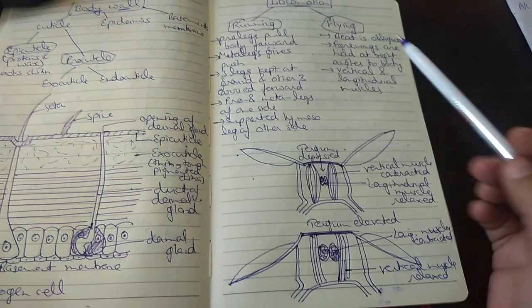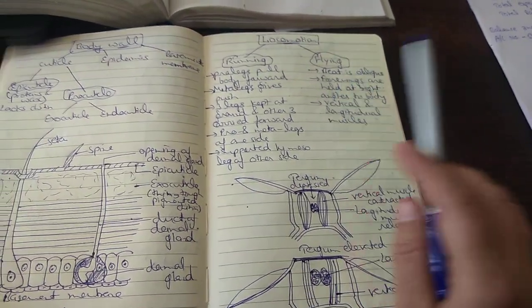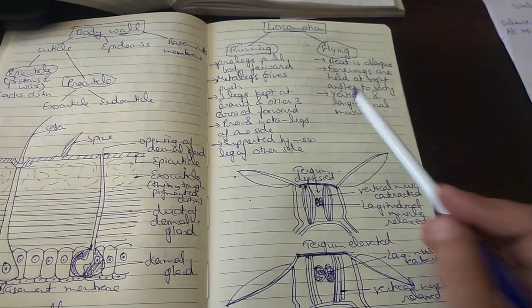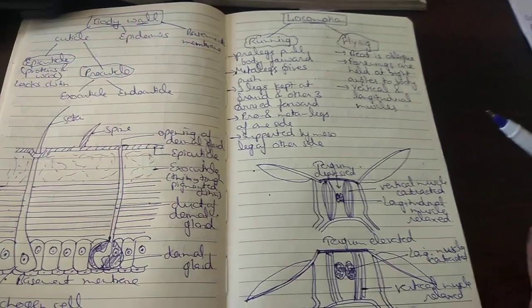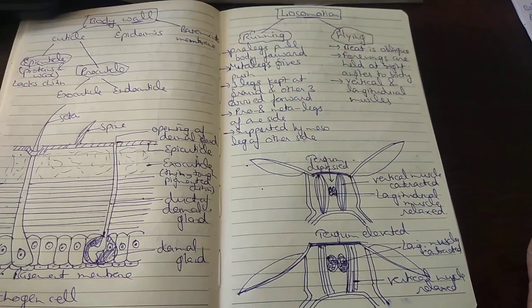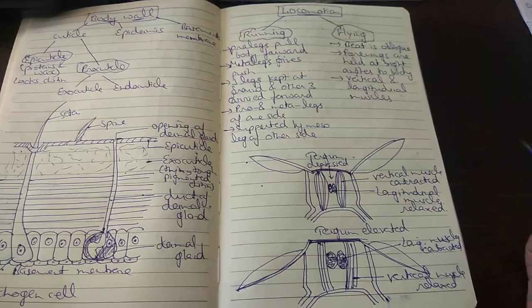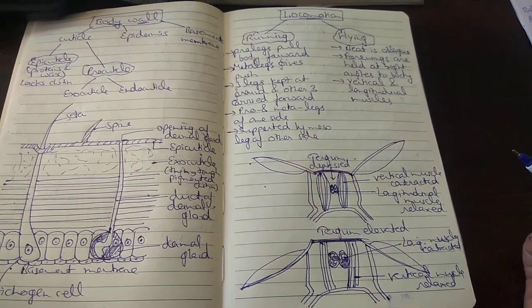The next mode of locomotion is flying. Although rare, it is observed that cockroaches show flying through the beating of wings. As they belong to the insecta class, they have two pairs of wings, but the fore wings are modified into membranous structures and are not involved in flying. The hind wings are involved in flying.